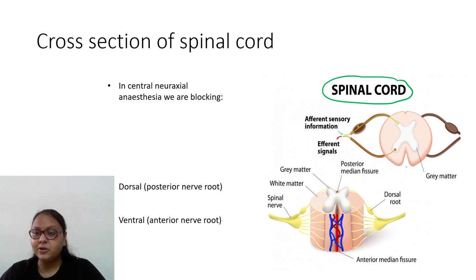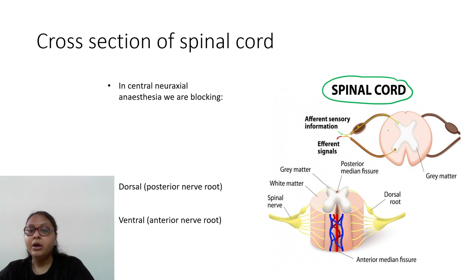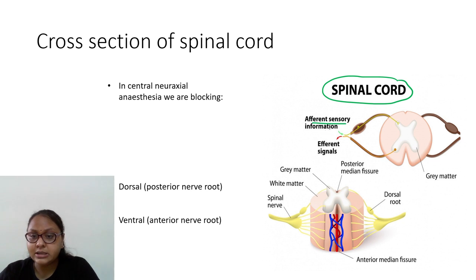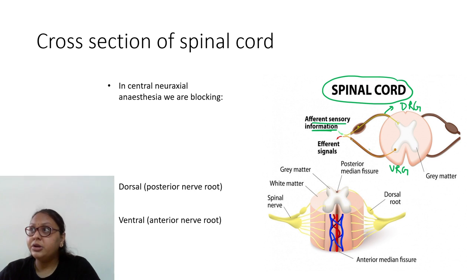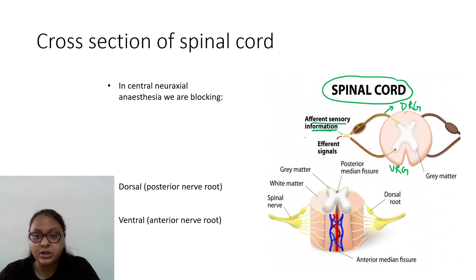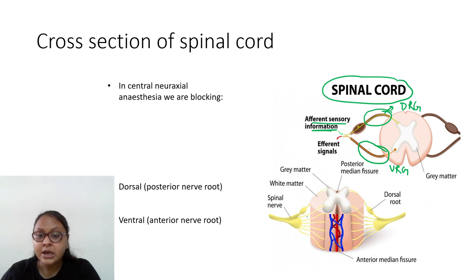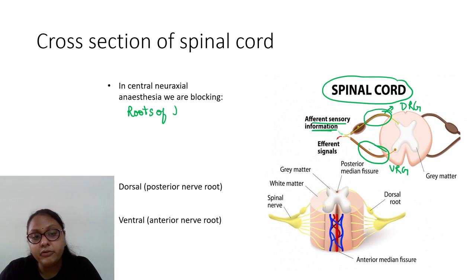This is the cross-section of the spinal cord showing the gray matter and white matter. From here emerge the dorsal and ventral roots. There is a dorsal root ganglion. The dorsal and ventral roots emerge and combine together to form the spinal nerve, which exits through the intervertebral foramina. By giving the drug we are blocking these two roots — the roots of the spinal nerves.